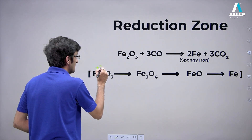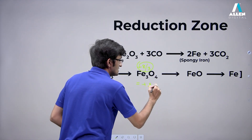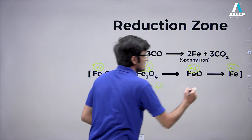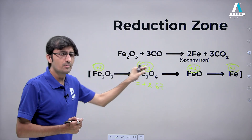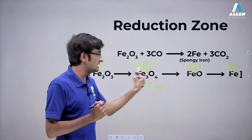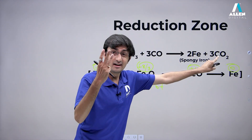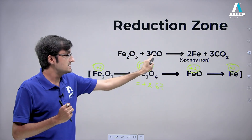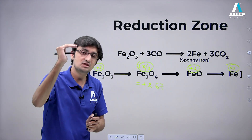The mechanism proceeds stepwise through oxidation states of iron: Fe₂O₃ has oxidation state +3; Fe₃O₄ has +8/3 (approximately +2.67); FeO has +2; and finally Fe has 0. The oxidation state of iron decreases step by step. CO is used 3 times and CO₂ is formed 3 times, converting Fe₂O₃ step by step to Fe. CO acts as a reducing agent at lower temperature because the reduction zone is at the top of the blast furnace where temperature is minimum among all zones.